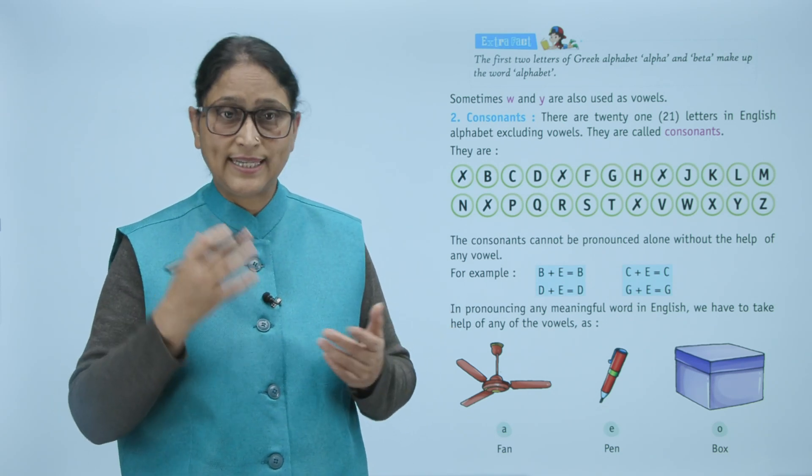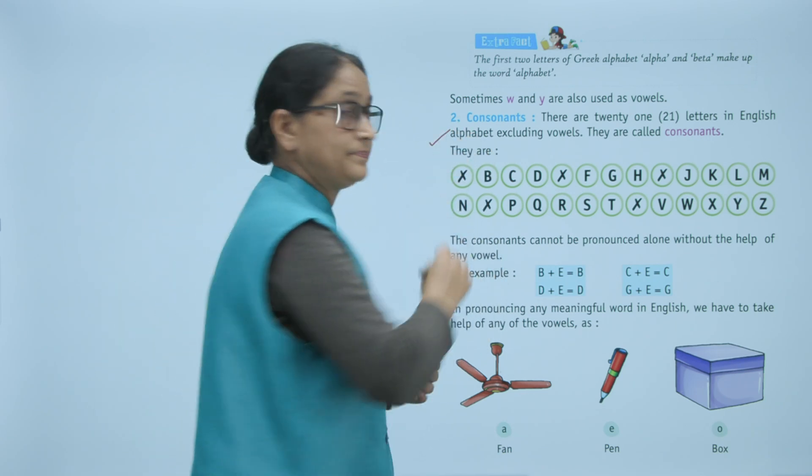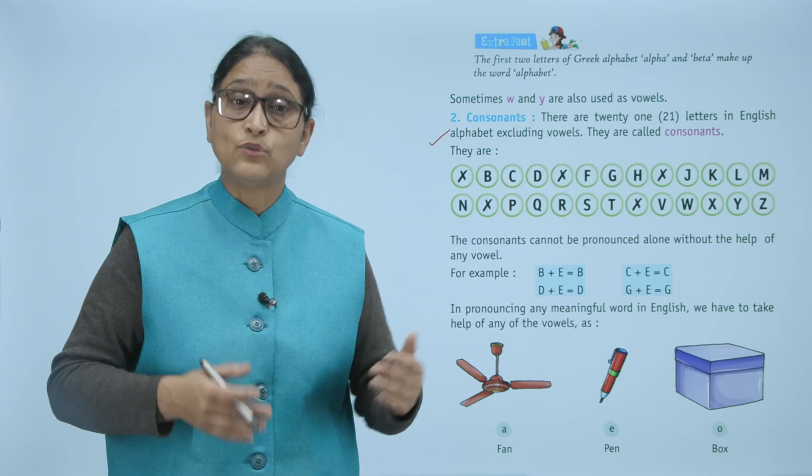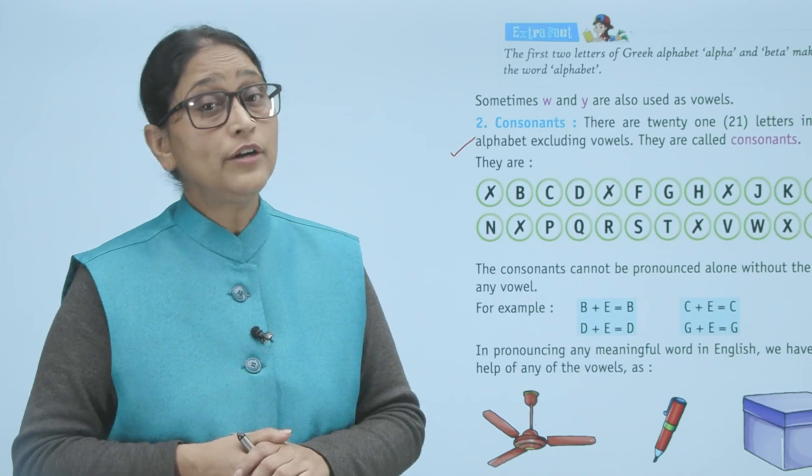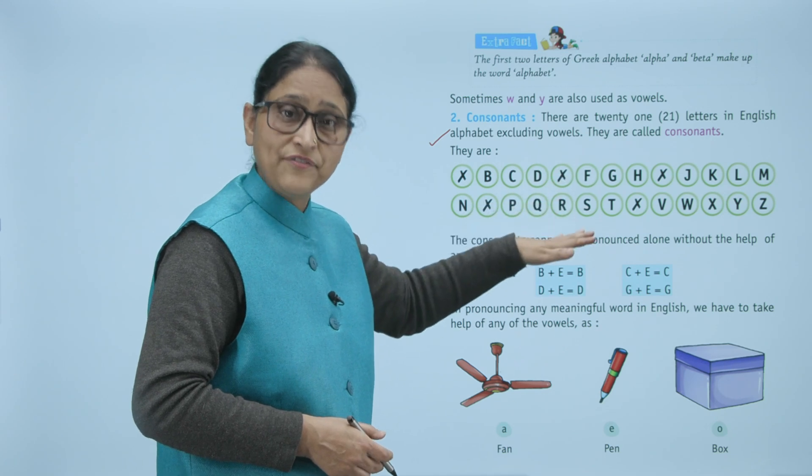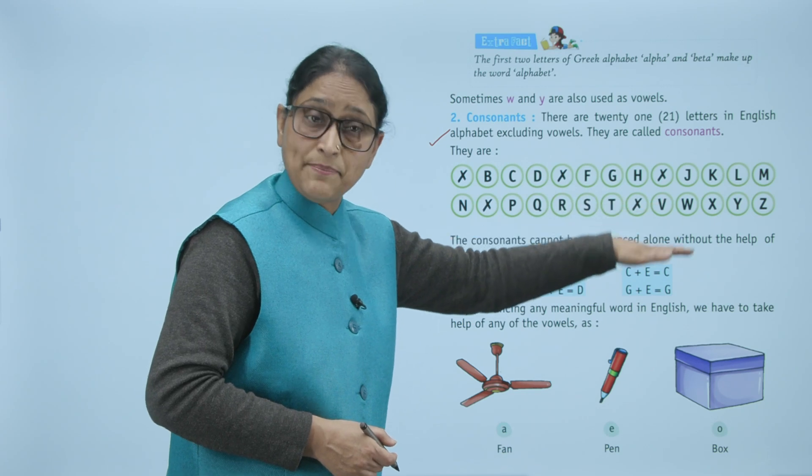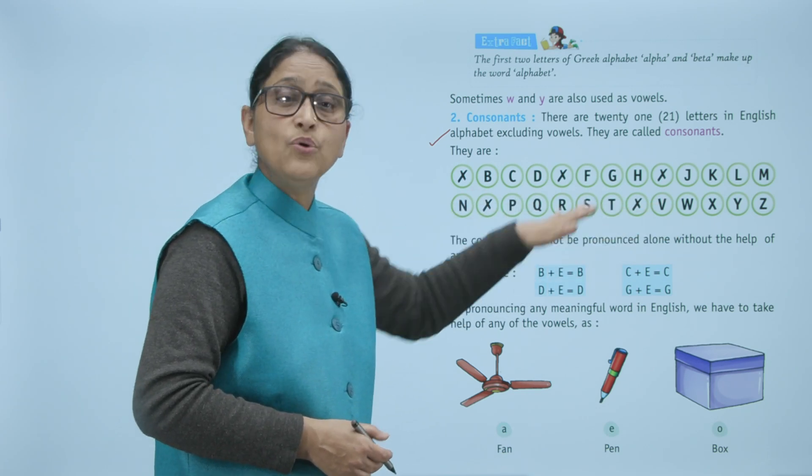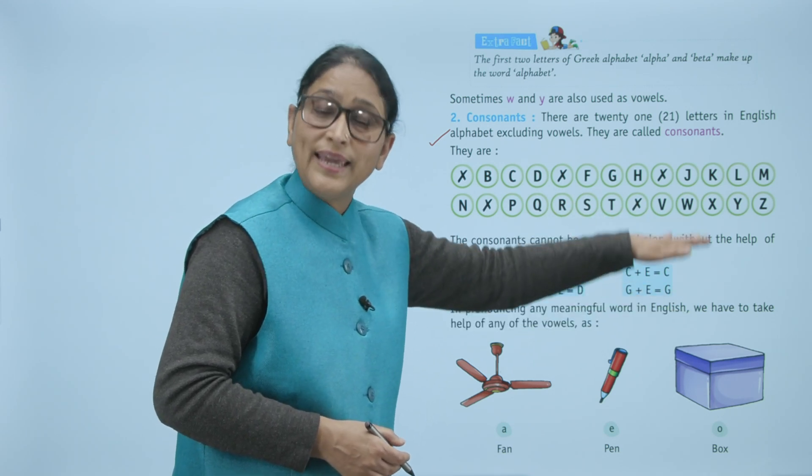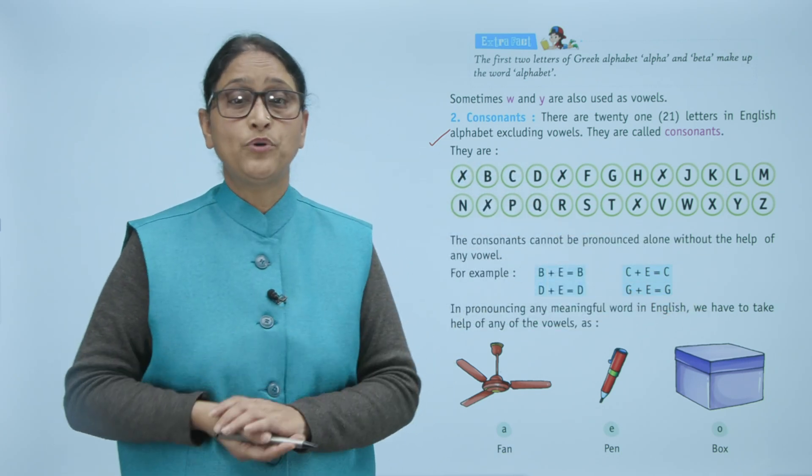Next, consonants. There are 21 letters in the English alphabet excluding vowels. They are called consonants. They are: B, C, D, F, G, H, J, K, L, M, N, P, Q, R, S, T, V, W, X, Y. The consonants cannot be pronounced alone without the help of any vowel.